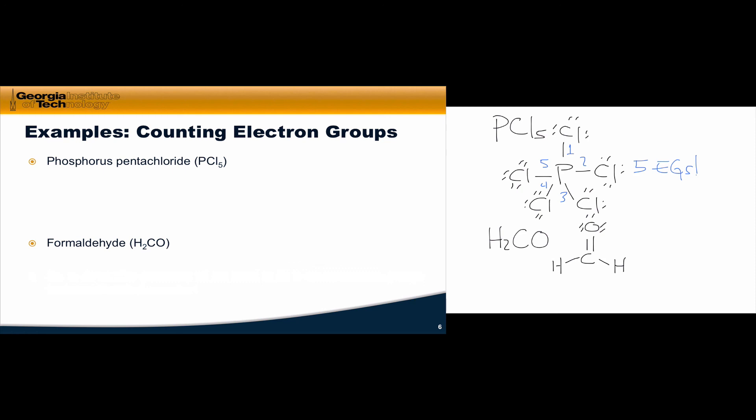If we look at formaldehyde, each of the CH bonds counts as a single electron group, so we get two electron groups out of those, and remember that we count the CO double bond as a single electron group, and so in total we find three electron groups around the carbon in formaldehyde, and remember that we refer to this number five and three as the steric number.